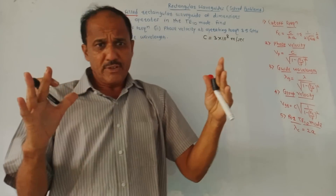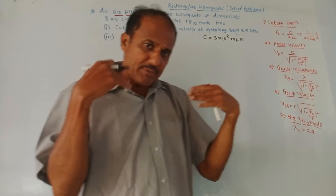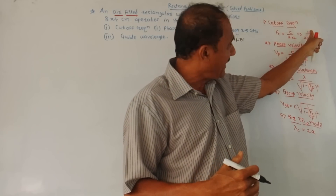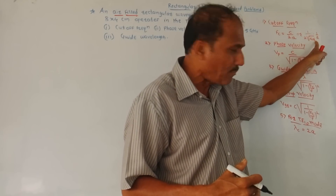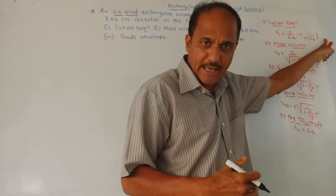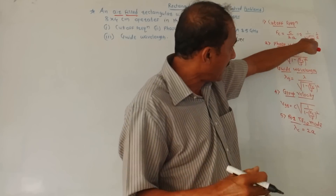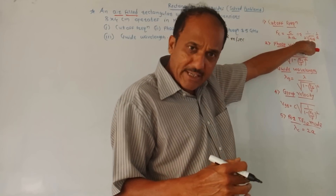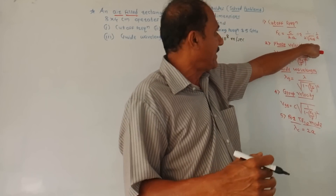If the medium is not air but something else, then the generalized formula is 1 upon 2 times square root of mu epsilon, into 1 by a. Again, a is the breadth of the waveguide. Mu is permeability and epsilon is permittivity.